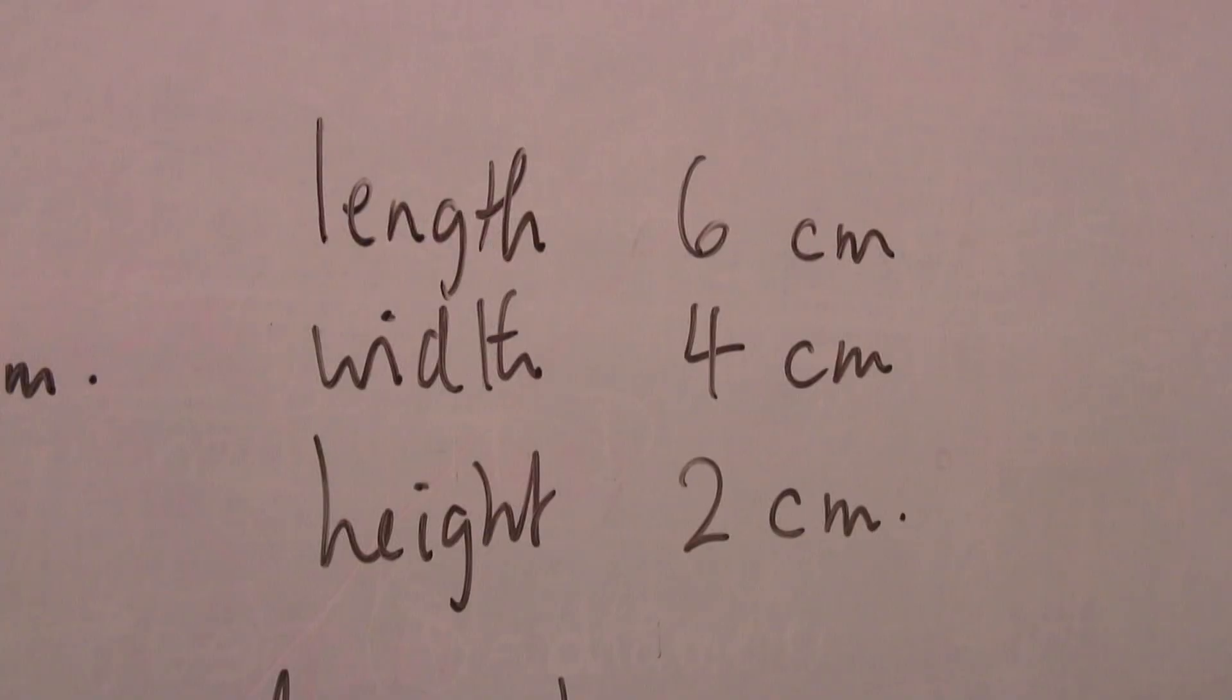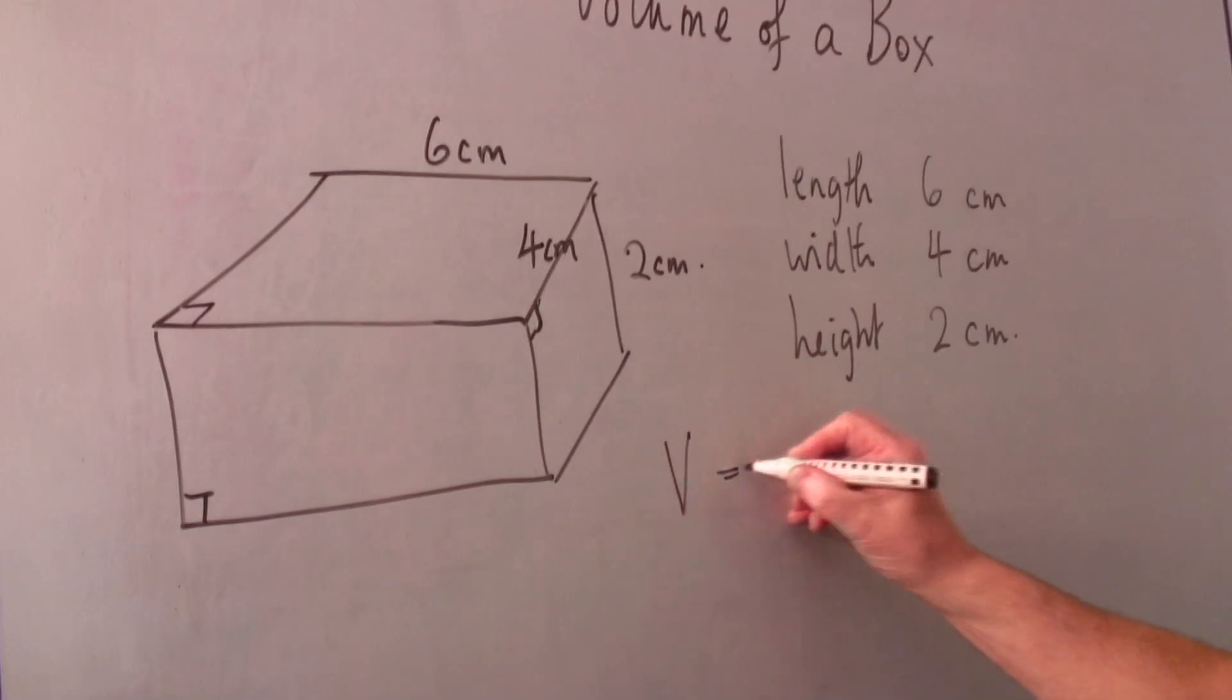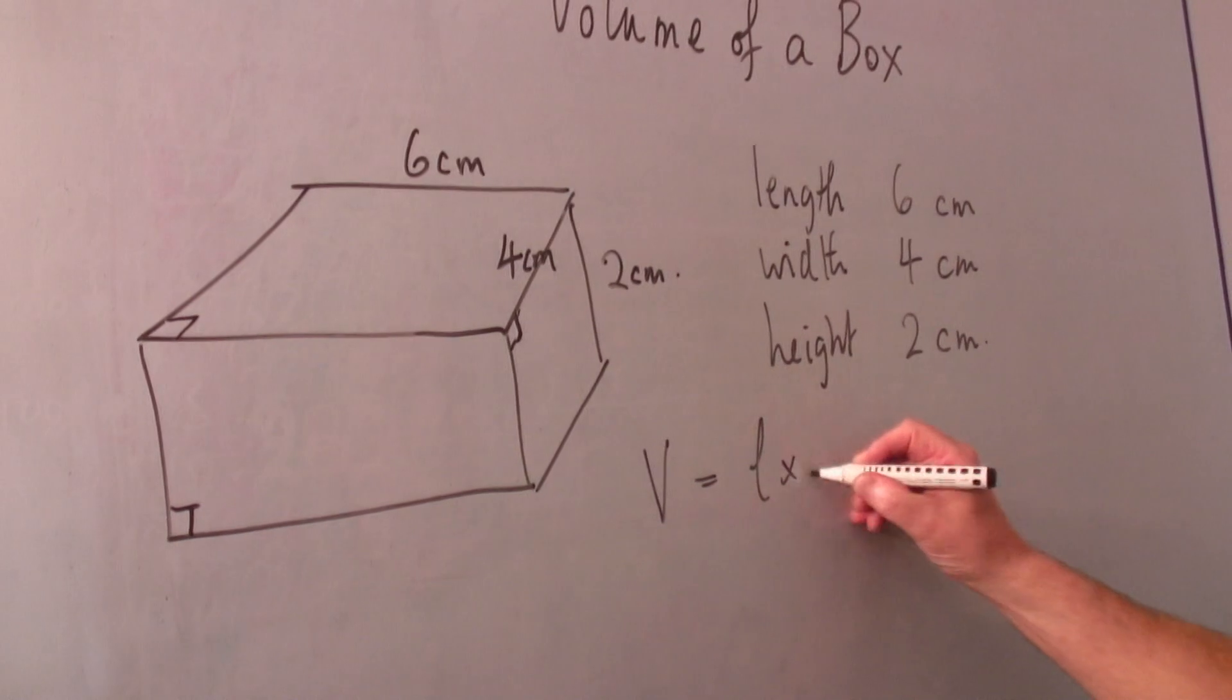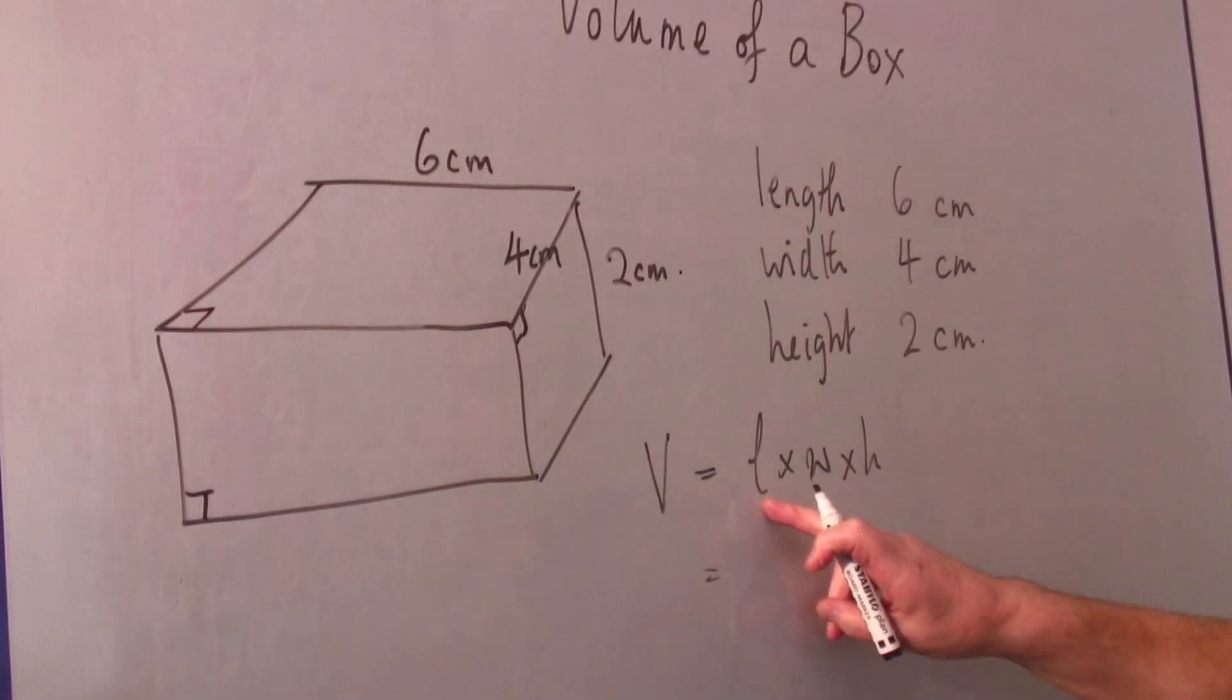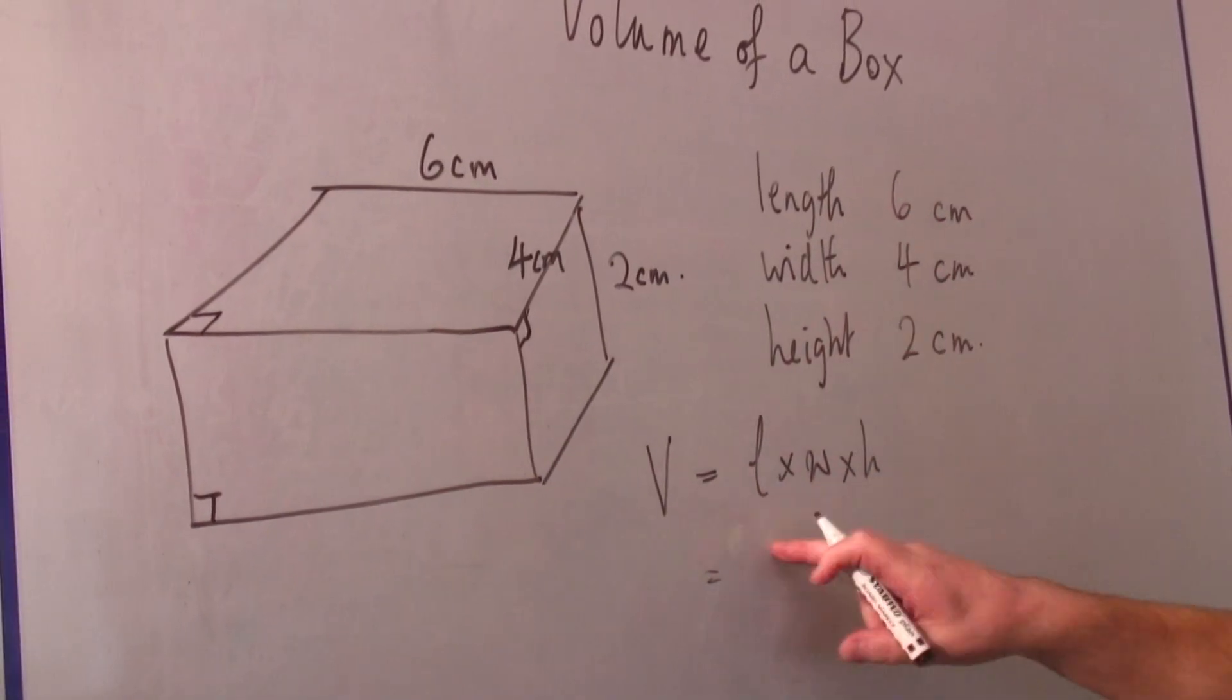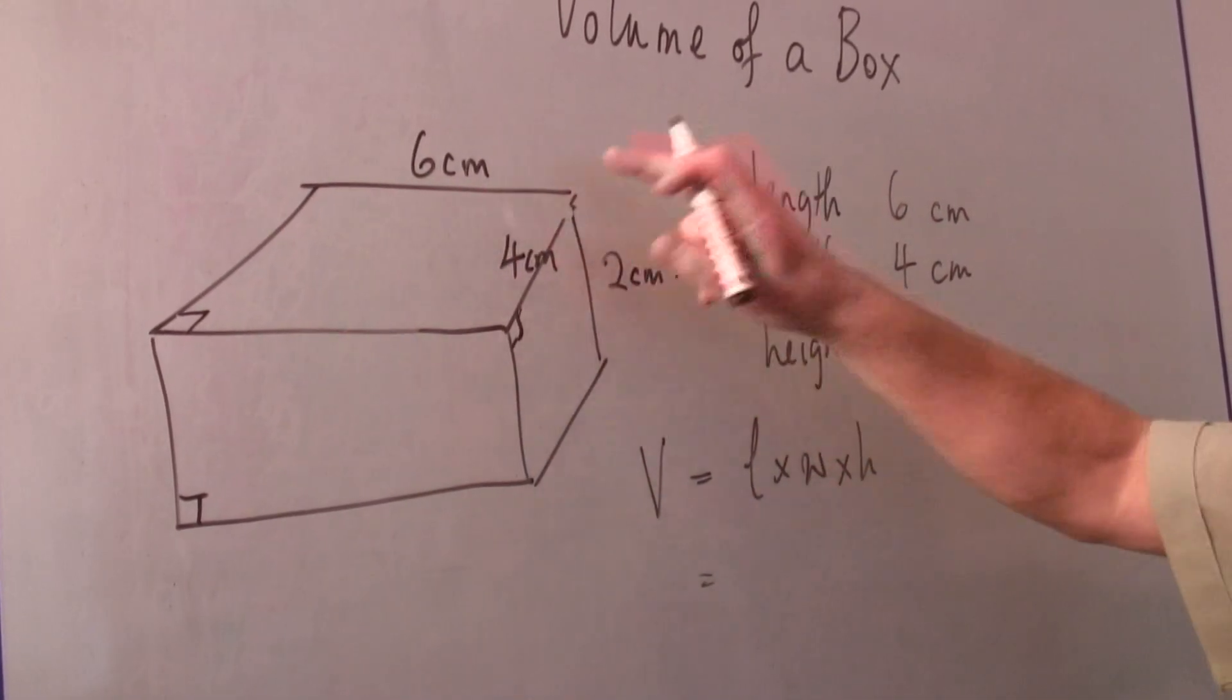And the formula is that the volume is the length times the width times the height. And substituting quickly into this formula, the length we know is six centimeters, here's the length, six centimeters.